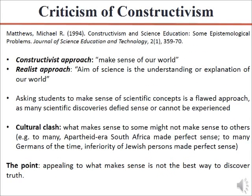Although constructivism does have benefits in student learning, there are a couple of major criticisms brought against constructivism by Michael R. Matthews from his 1994 paper titled "Constructivism and Science Education: Some Epistemological Problems." Matthews notes that the constructivist approach to science is that students try to make sense of the world. Asking students to make sense of scientific concepts is unstable ground, because many discoveries in science actually defied what was, at the time, considered common sense. There is also the issue that certain scientific phenomena cannot be experienced. There is also a cultural clash in that what makes sense to some people might not make sense to others. Matthews' point is that to discover the truth, appealing to what makes sense is not the best way to get there.